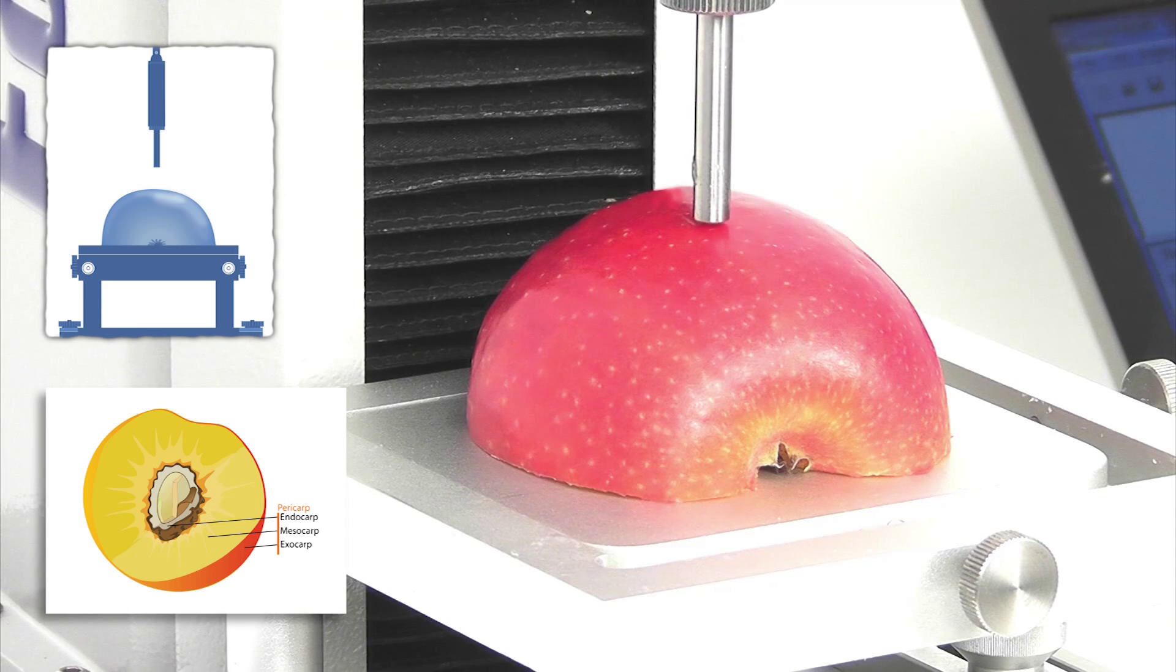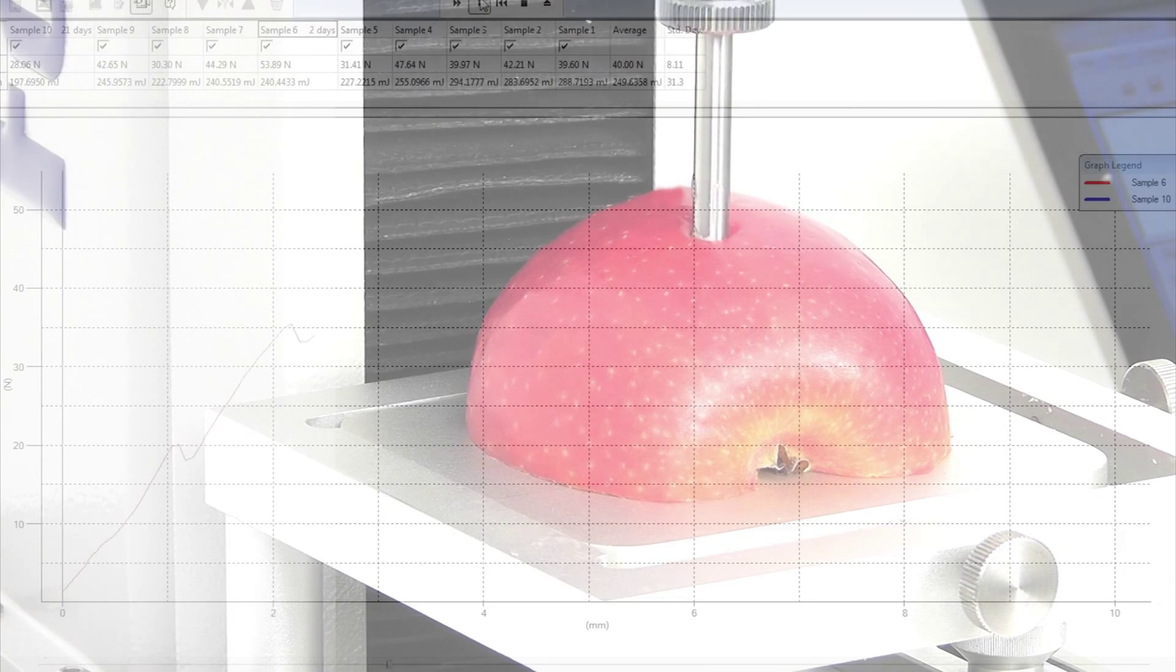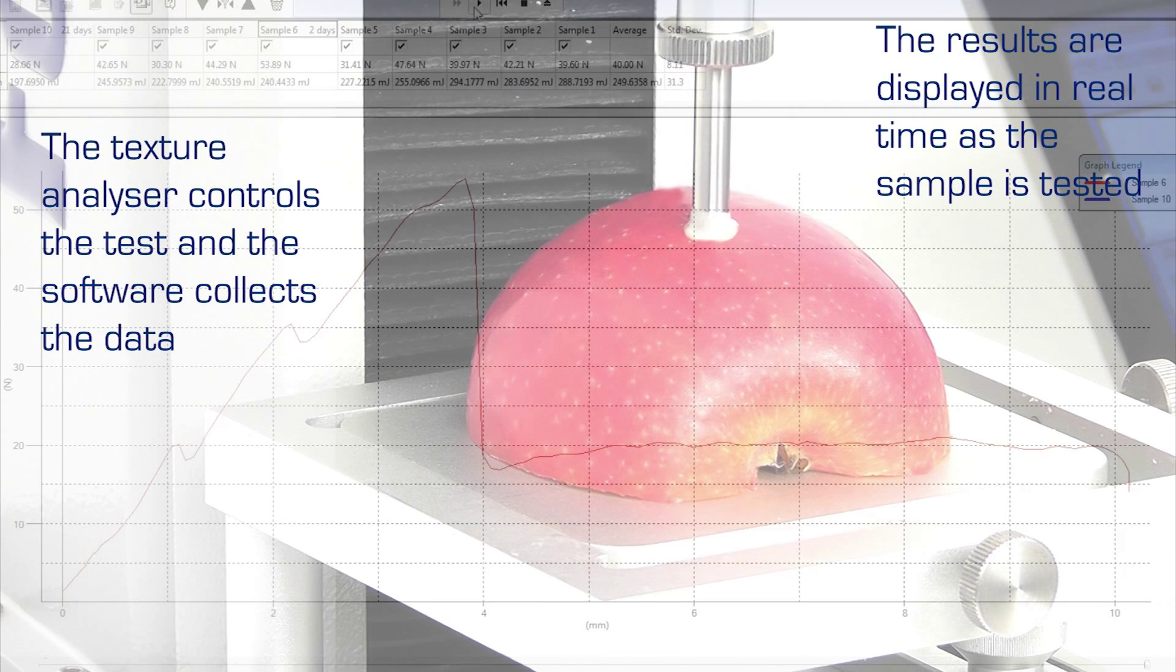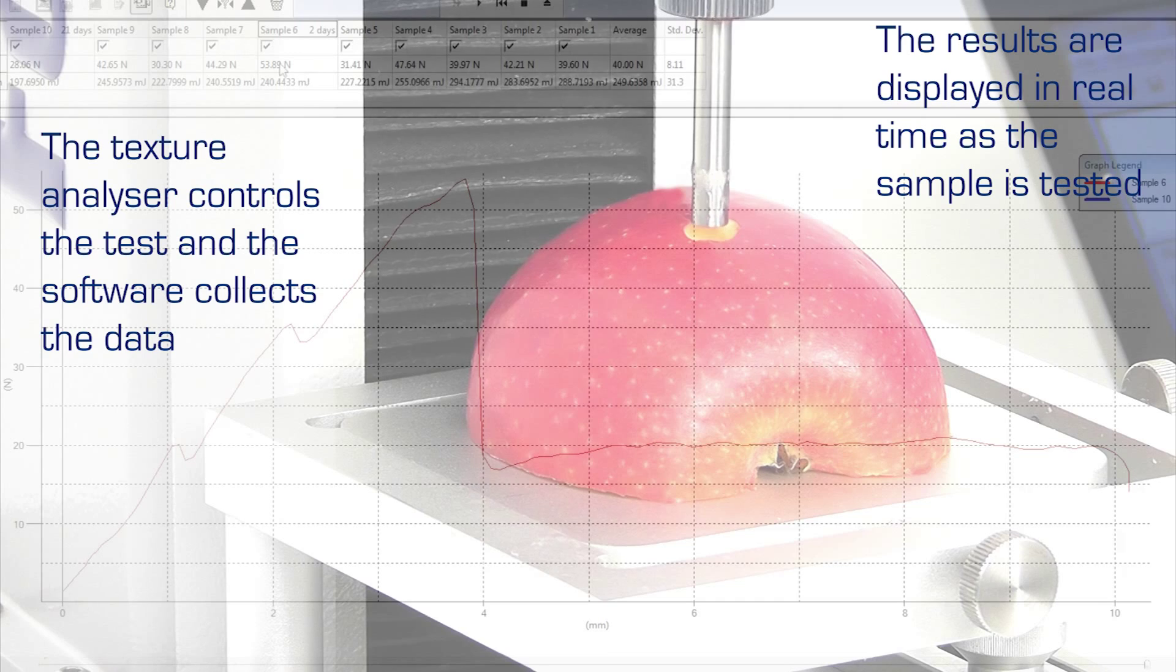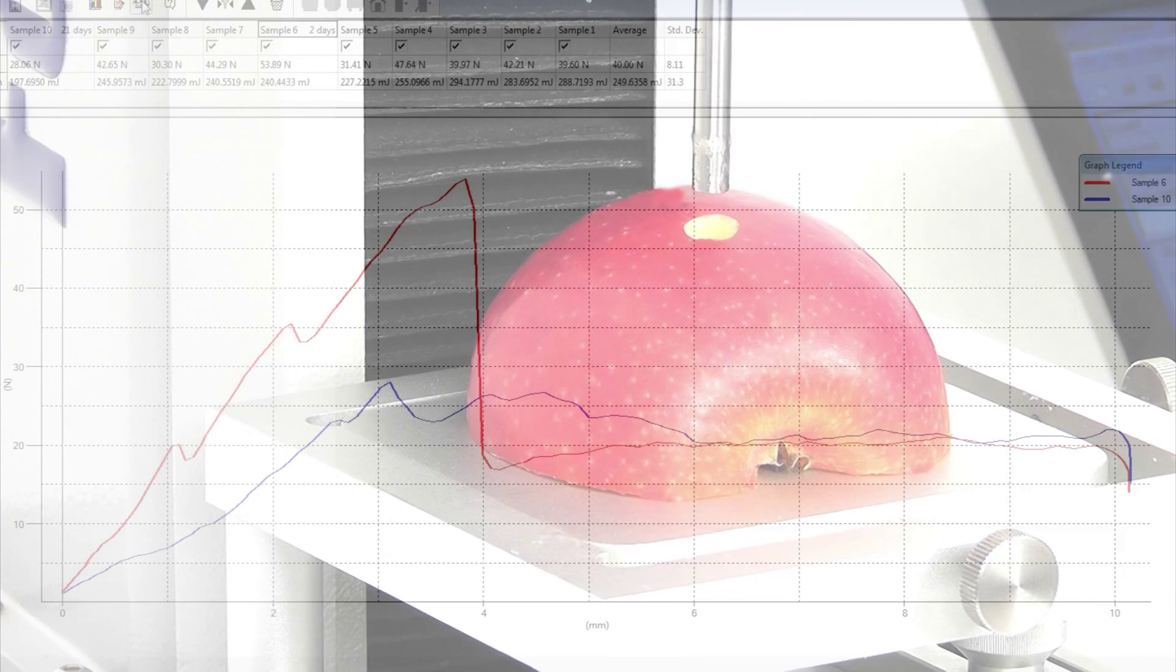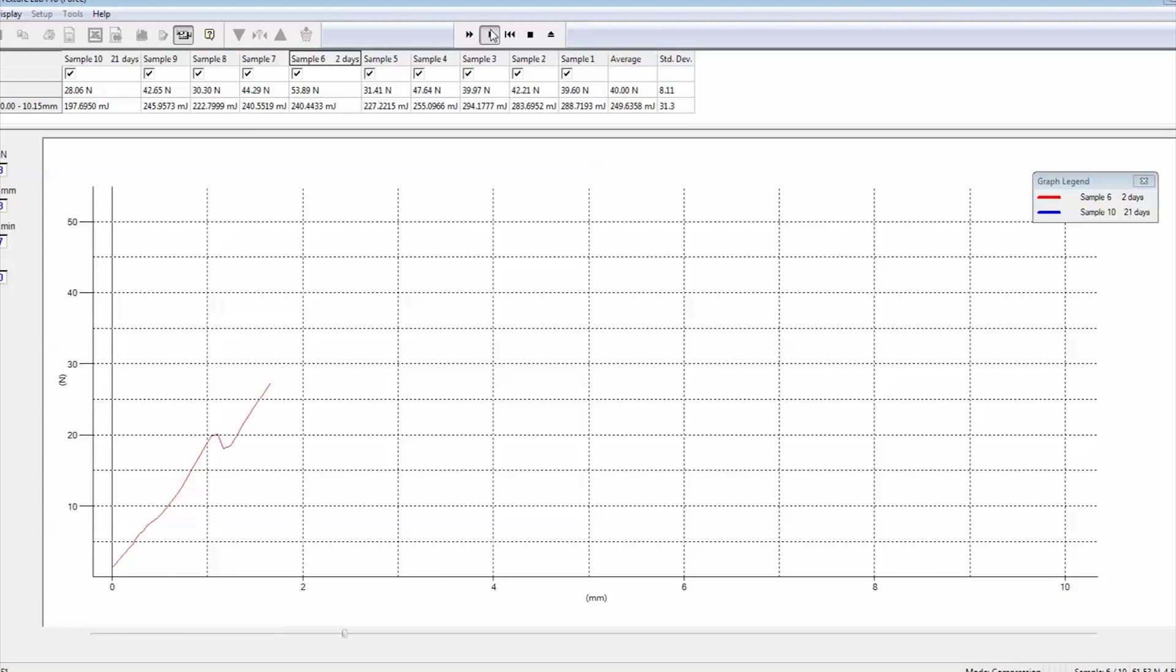Real-time graphing clearly shows the behavior of the sample under test. Features of the curve can be identified which indicate ideal or undesirable sensory characteristics and the calculated values correlated to preferred quality benchmarks.